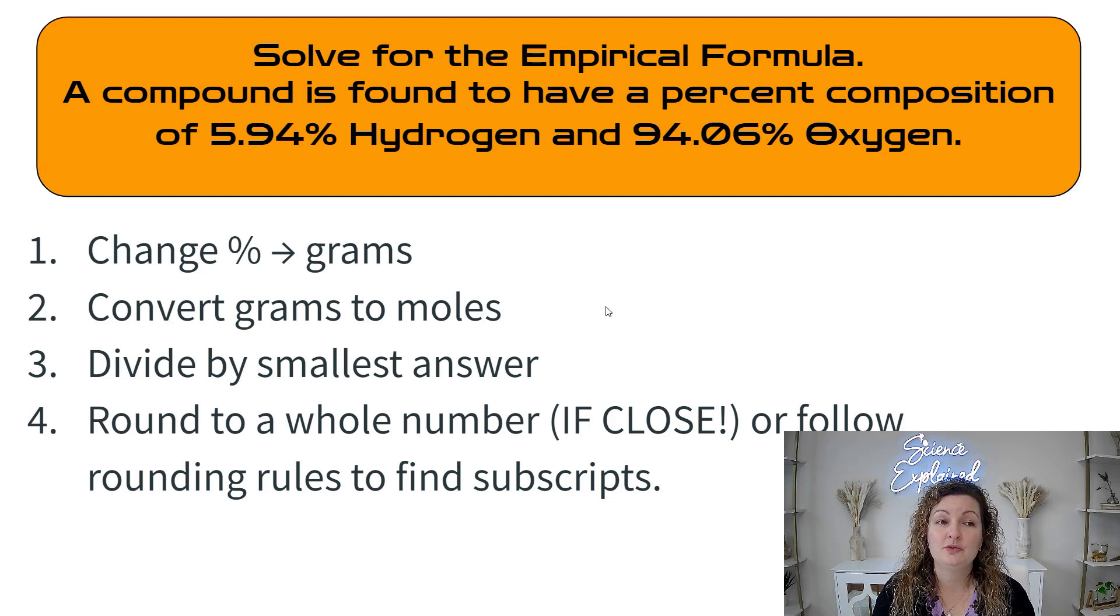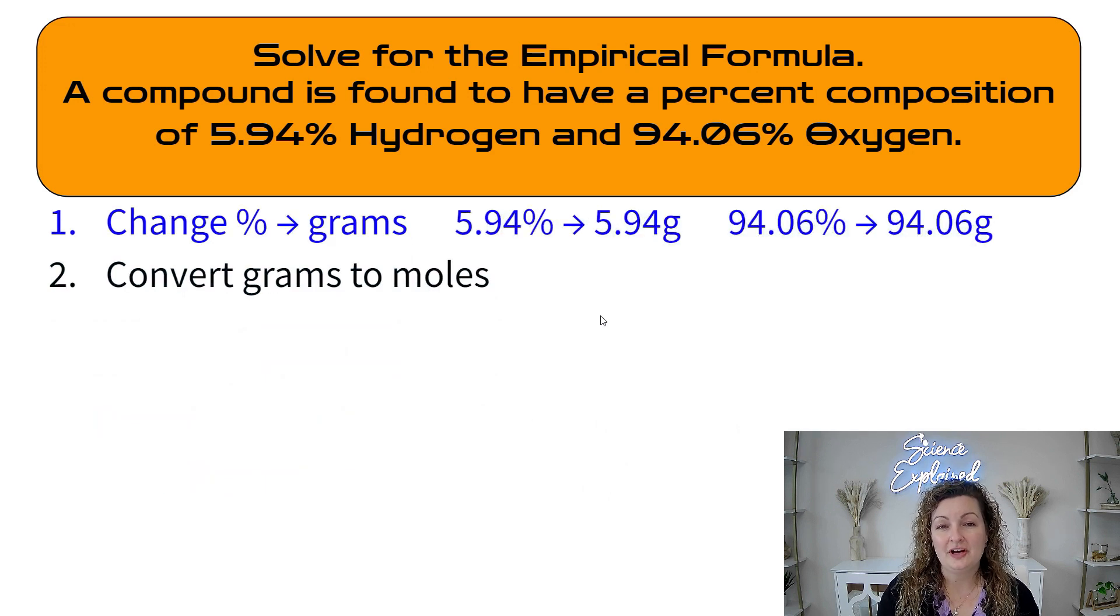So it says solve for the empirical formula. A compound is found to have a percent composition of 5.94% hydrogen and 94.06% oxygen. In order to solve this, we need to follow these steps here. The first thing we're going to do is change our percentage to a gram. Then we're going to convert our grams to moles in a bridge. It's a one step bridge. And then we're going to divide by the smallest number by all of our answers. Once we do that, we need to look at our rounding rules so that we can go ahead and get our empirical formula.